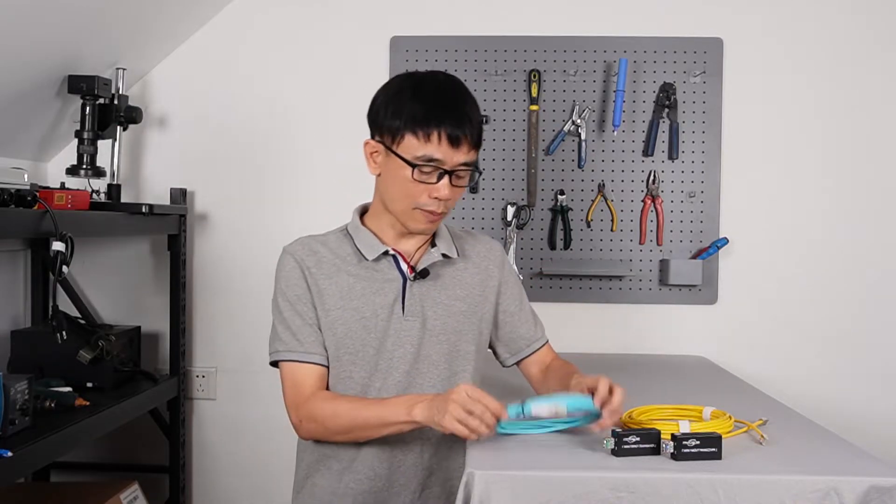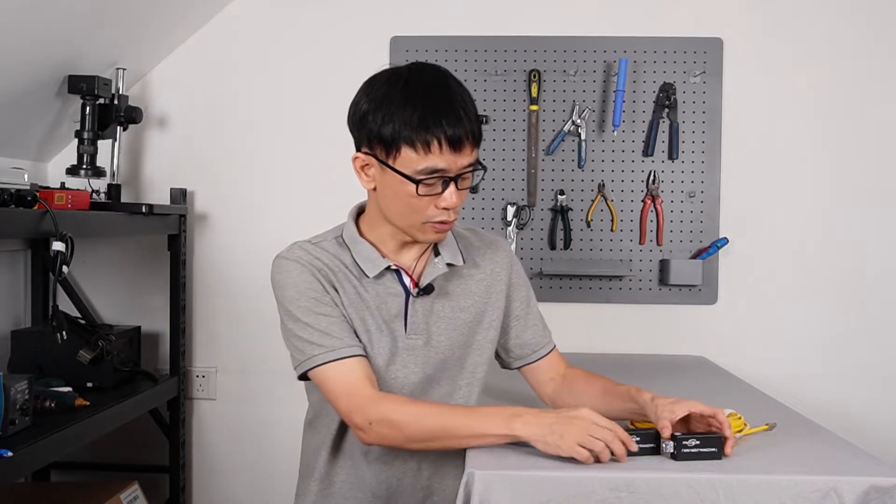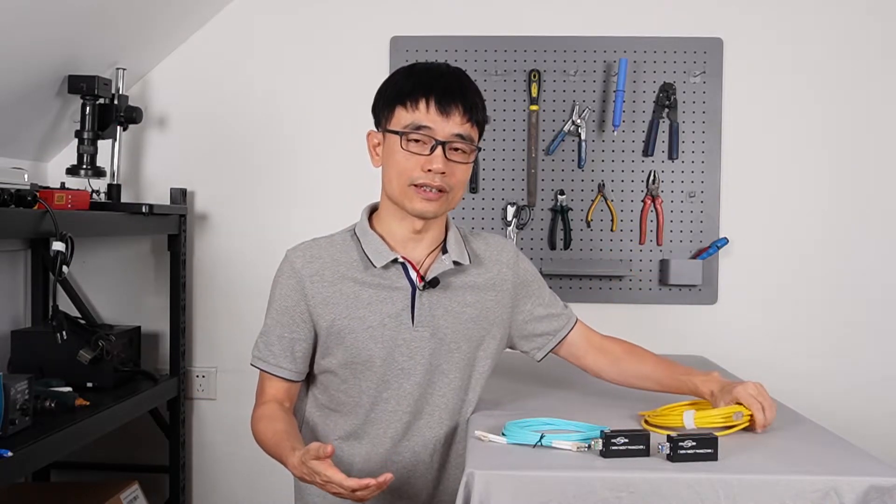But we cannot connect the fiber optic cable directly to most of the IP devices such as IP camera, SSPON, or NVR because they only can take in the Cat5e or Cat6 internet cable connection. In this case, we will need to use the medial converter like this. The medial converter will convert the fiber optical signal to the electronic signal so we can work with the Cat5e or Cat6.